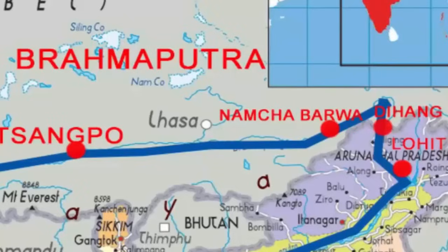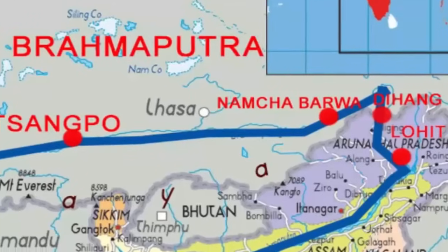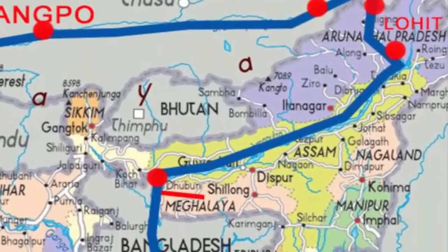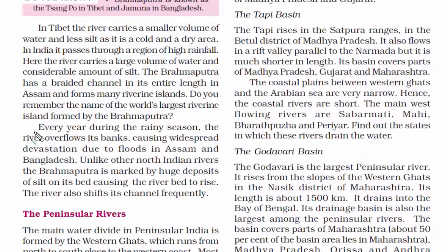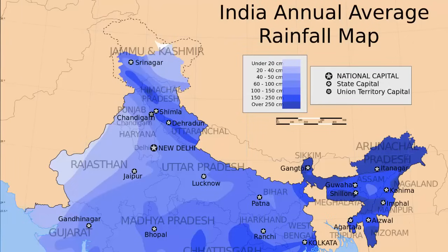Here it is called the river Dihang, and it is joined by other rivers such as the Dibang, the Lohit and many other tributaries to form the Brahmaputra in Assam. From there, it enters Bangladesh near Dhubri and heads southwards, finally draining into the Bay of Bengal.